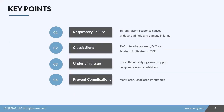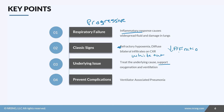Remember that ARDS is a progressive disorder that prevents gas exchange because of an inflammatory response that causes widespread fluid and damage to the lung tissues. Classic signs are refractory hypoxemia — that decreasing PF ratio — and diffuse bilateral infiltrates on the chest x-ray, which is that whiteout. Our goal is to treat the underlying cause, catch it sooner rather than later, and support the patient's oxygenation and ventilation while their lungs are healing.